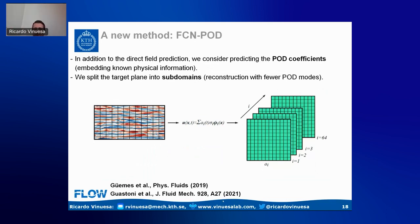The FCN-POD approach decomposes the spatiotemporal signal into spatial modes and temporal coefficients. By choosing subdomains wisely, we can find a good reconstruction of the total energy without too many modes. We only predict the temporal coefficients — the spatial information comes from the spatial modes. This is the FCN-POD method, and we'll see in which cases it's better to use one or the other.